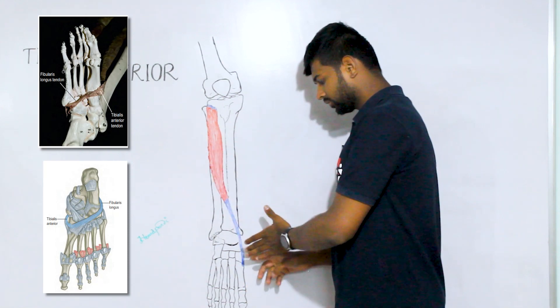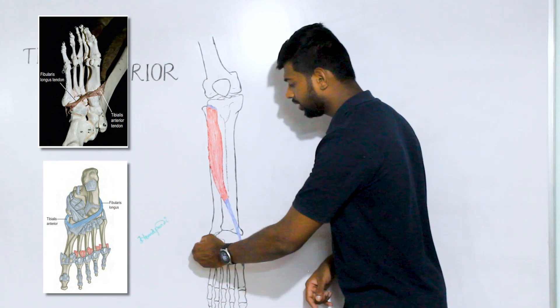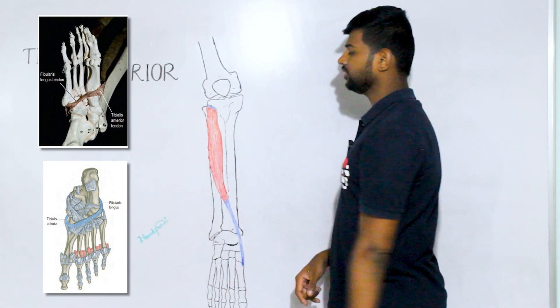I'll tell you how the tibialis anterior attaches to the first cuneiform and the first metatarsal. Peroneus longus also attaches to the same place, passing under the feet laterally and attaching to the fibula.